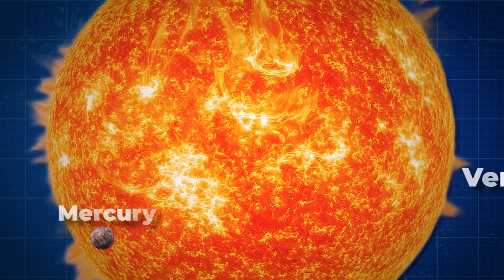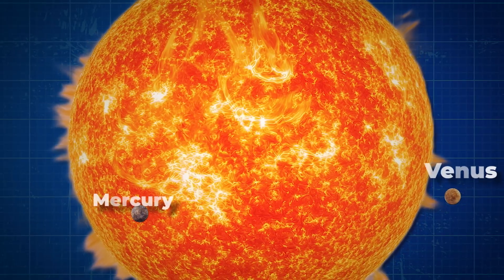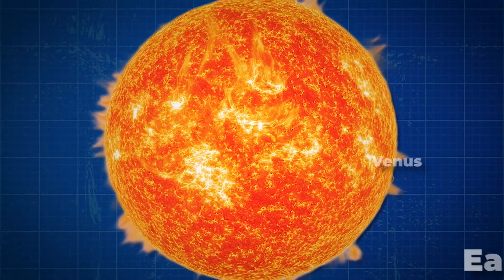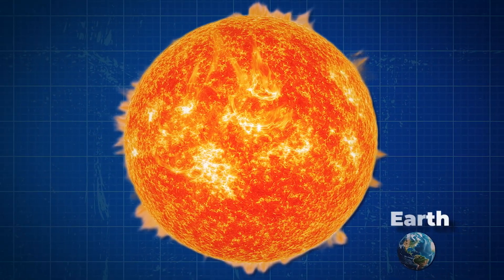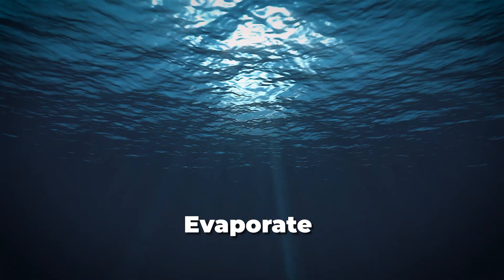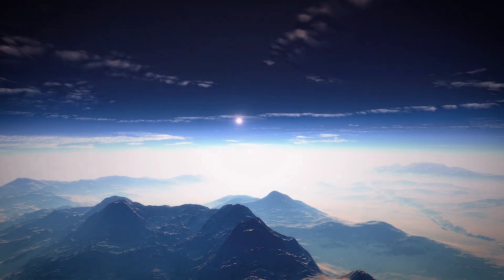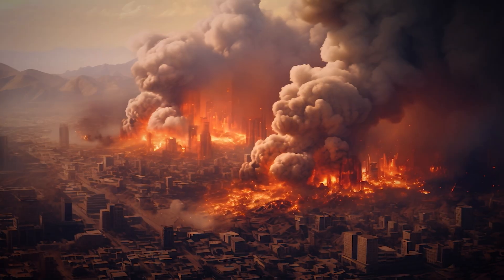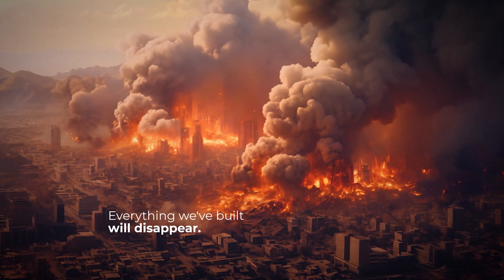Its radius will increase hundreds of times. It will swallow Mercury, then Venus, and then it will reach Earth's orbit. Our oceans will evaporate long before then. The atmosphere will burn up. The surface will melt. Everything we've built will disappear.